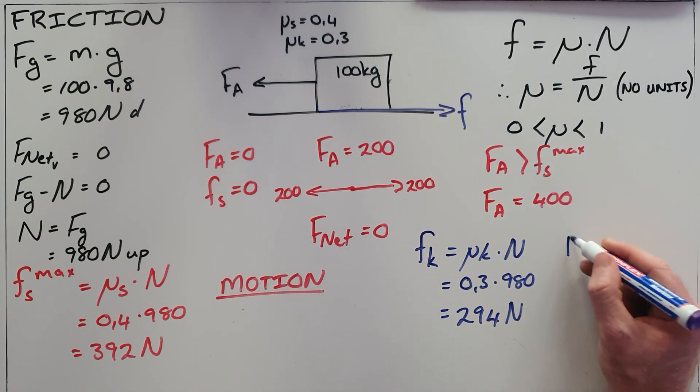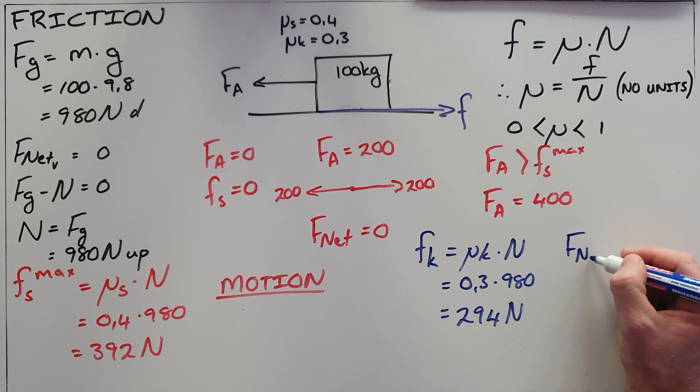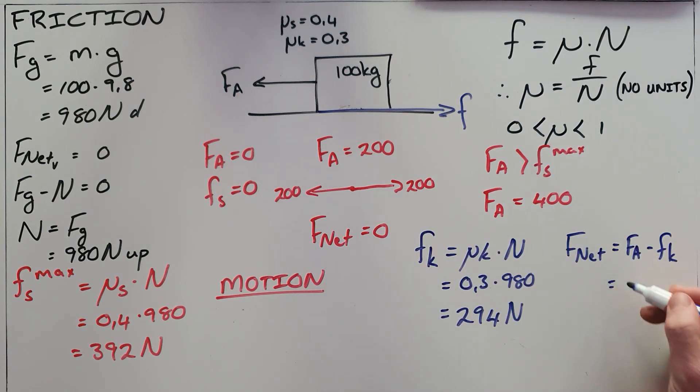The final thing we can see here is that this frictional force does not stop the object from moving because we have an applied force that is greater than the kinetic friction, which in this case means that this object has a net force acting on it of 106 newtons.